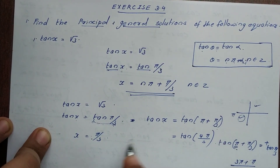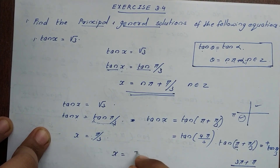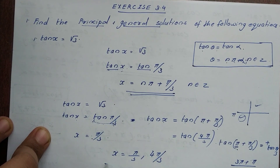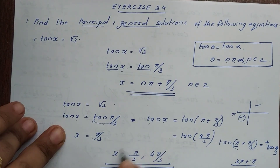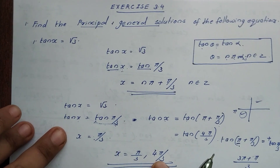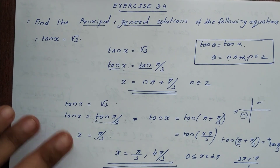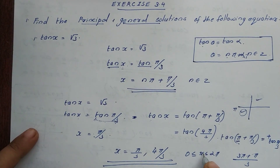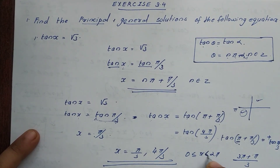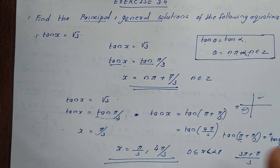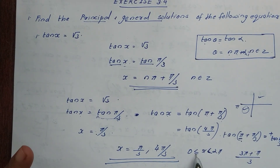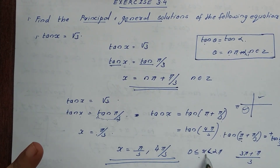So x is equal to π/3 and 4π/3. These are the principal solutions, which lie in the range 0 ≤ x < 2π.